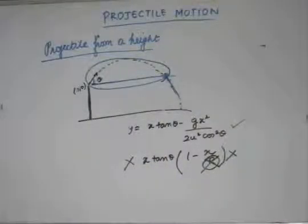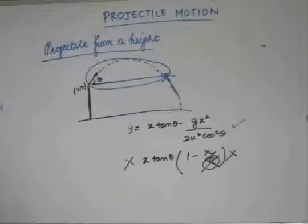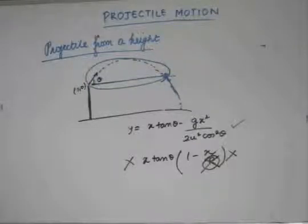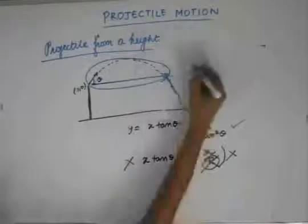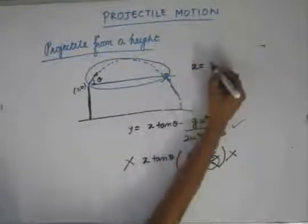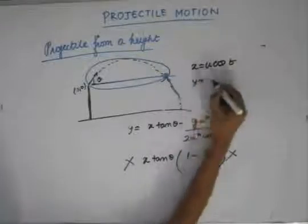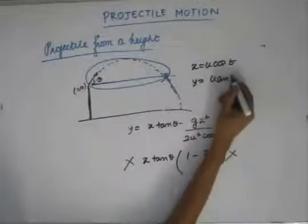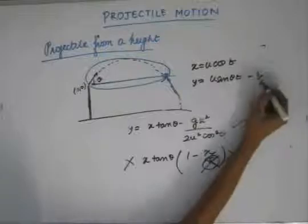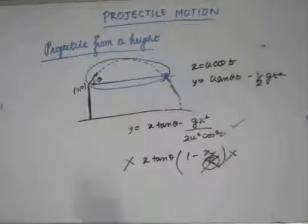While solving questions on projectile motion projected from a certain height, I will show you how both methods conclude to the same answer. The x component of displacement is given by u cos θ · t, and the y component is given by u sin θ · t − ½g t². These equations remain valid because they are the basic equations of kinematics.